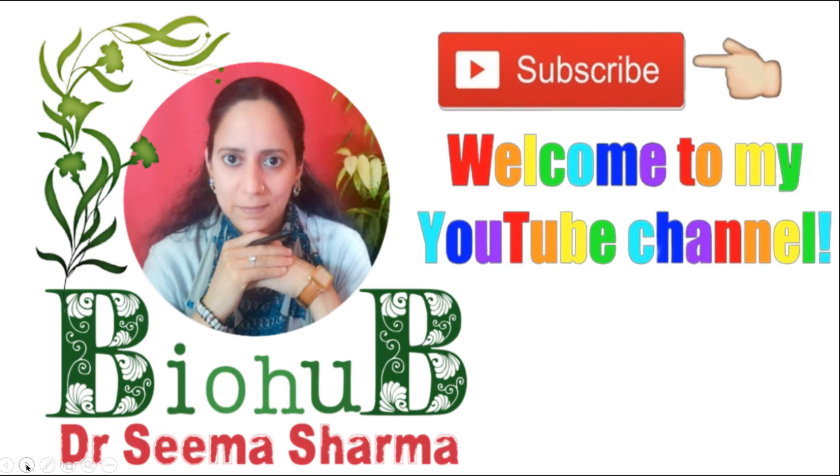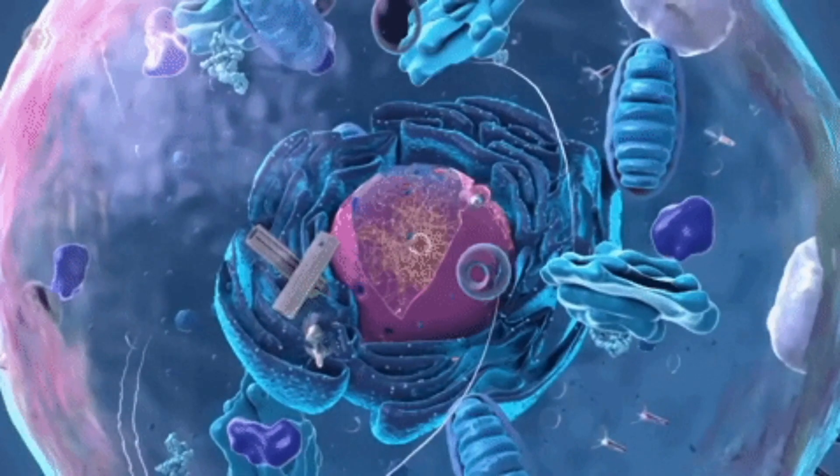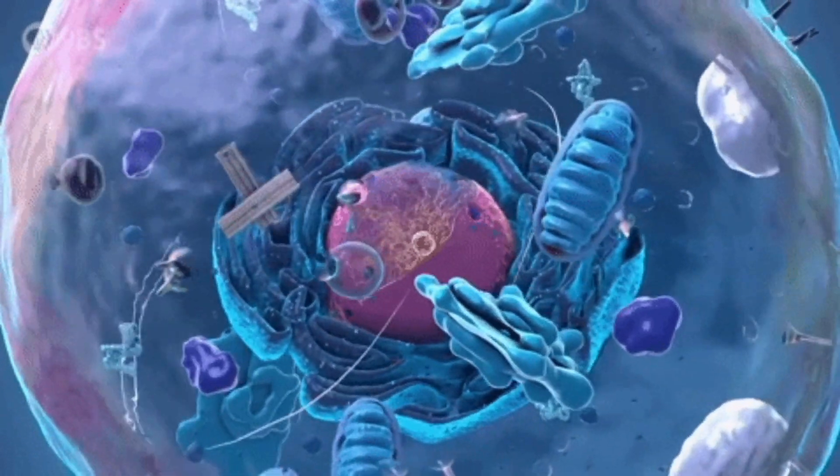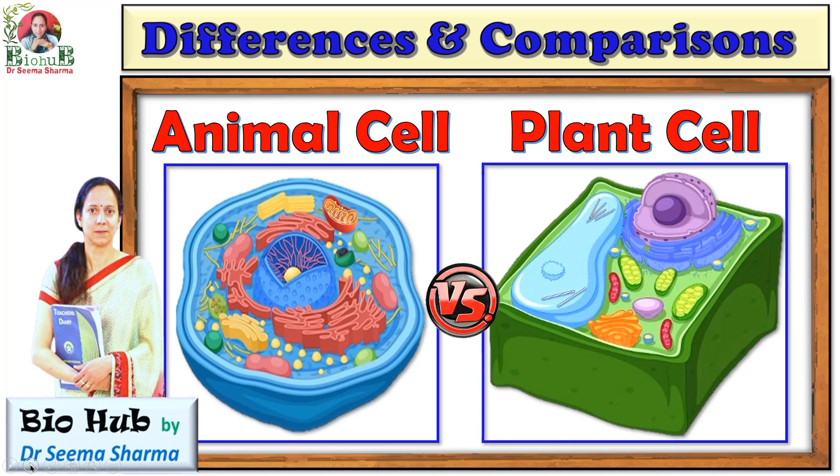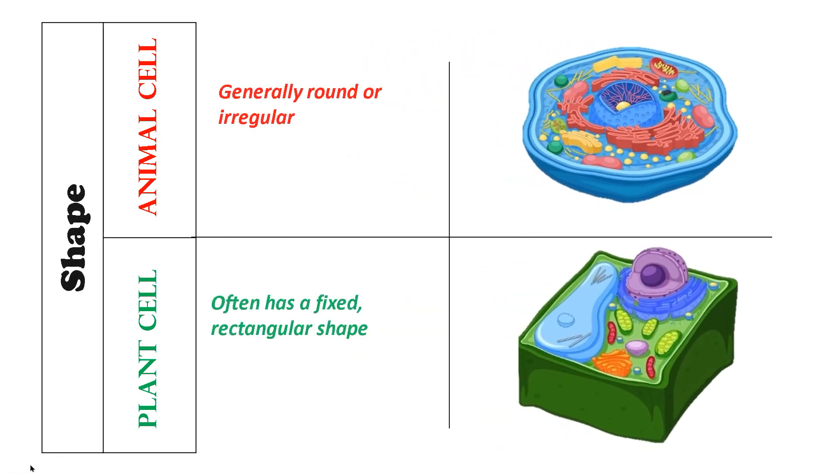Hi guys, welcome back to my channel Biohub. In this video we are going on a very special microscopic adventure to explore the basic differences between the animal cell and the plant cell. The first difference is the shape of the cell.